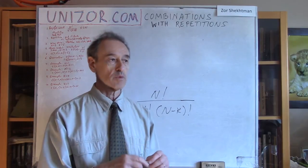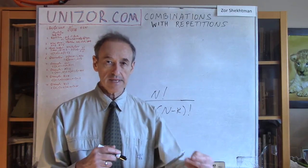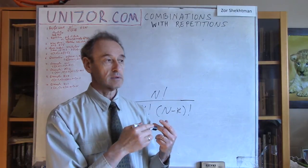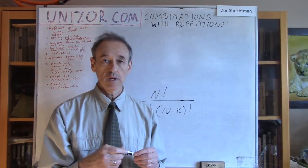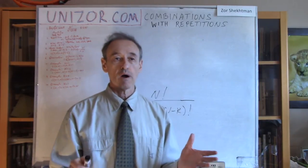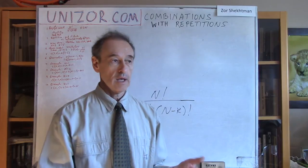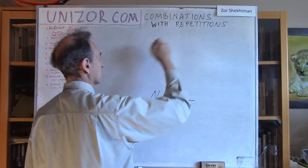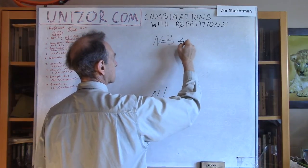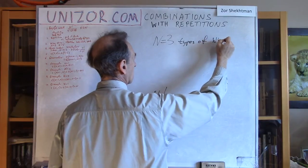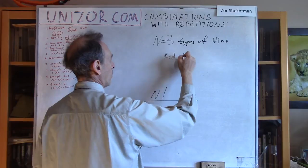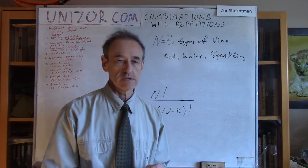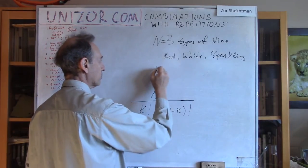Another explanation of exactly the same situation would be: instead of putting back the same object, I assume there is some other object of the same type replacing the one I picked. The particular example I use in the notes for this lecture on unizor.com is: consider you are buying a certain number of bottles of wine. You come to a store, and for simplicity, the store has only three types of wine — let's say red, white, and sparkling. And I have to pick up five bottles.